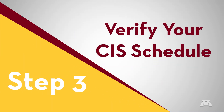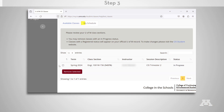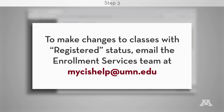Step 3: Verify your schedule. Use the View My Schedule tab to ensure your registration information is correct. Make a mistake? Classes that have an In Progress status may be removed. To make changes to a class with a Registered status, email the Enrollment Services team at mycishelp@umn.edu.